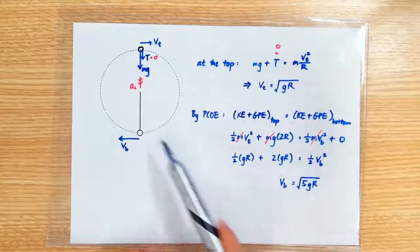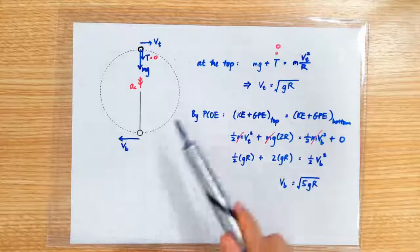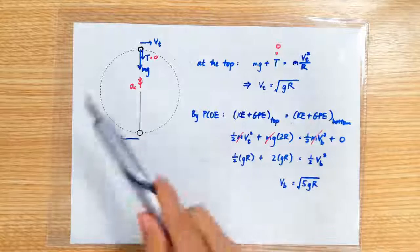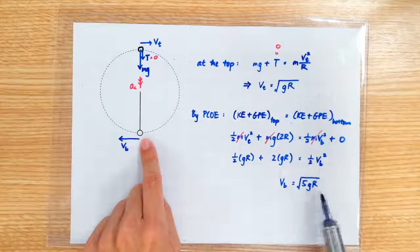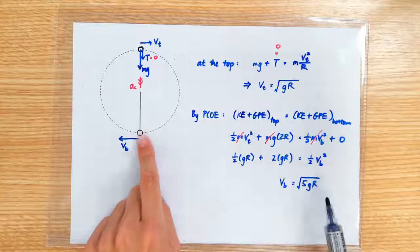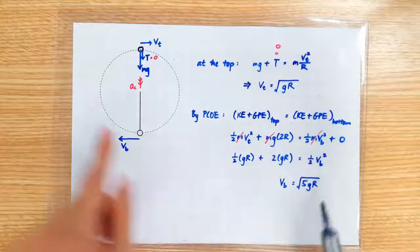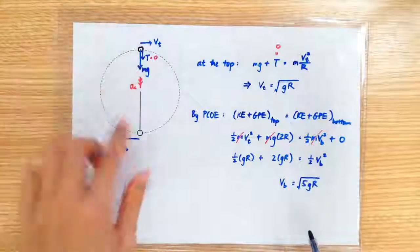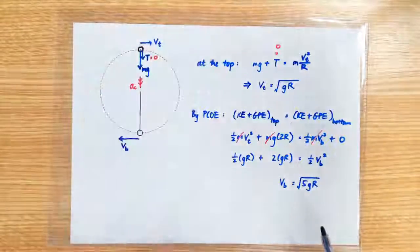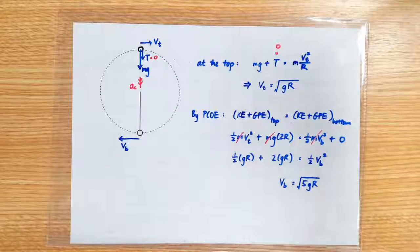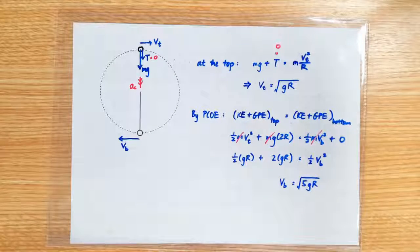So it doesn't matter what the mass of the stone is. If you want it to do the circular motion, it must be swung at the speed of square root of 5gr at the bottom. And the larger the circular motion, the larger the required speed at the bottom. Okay that's all. Ta-ta!